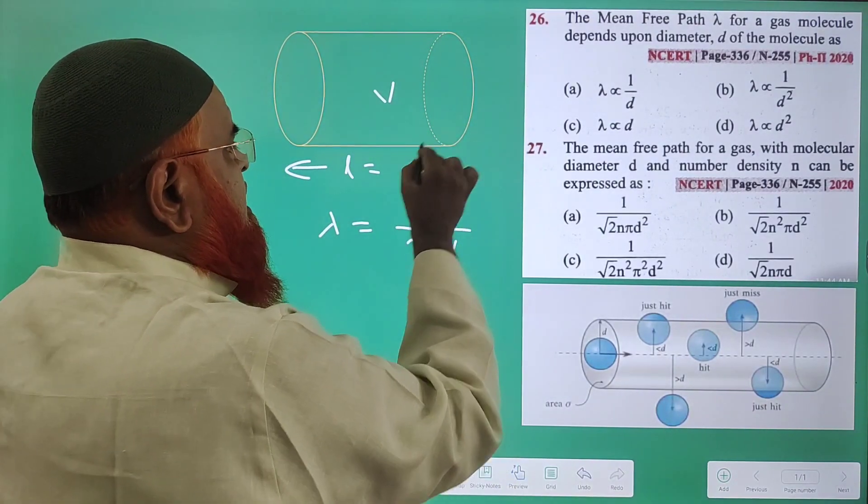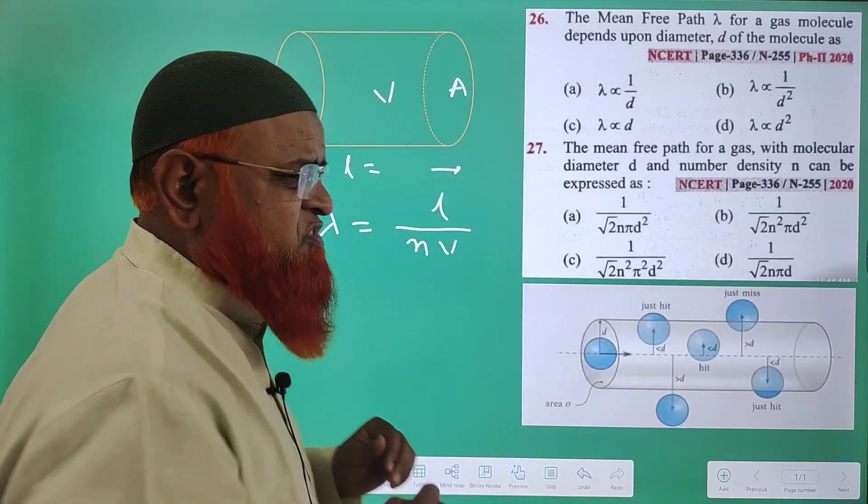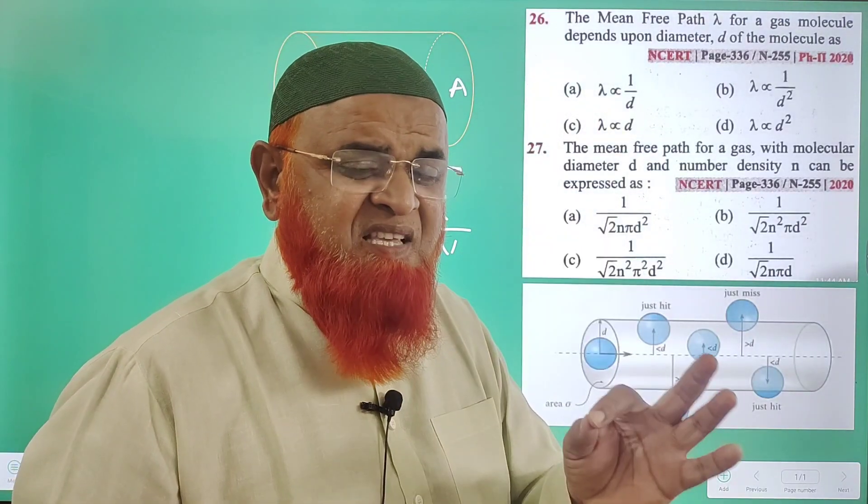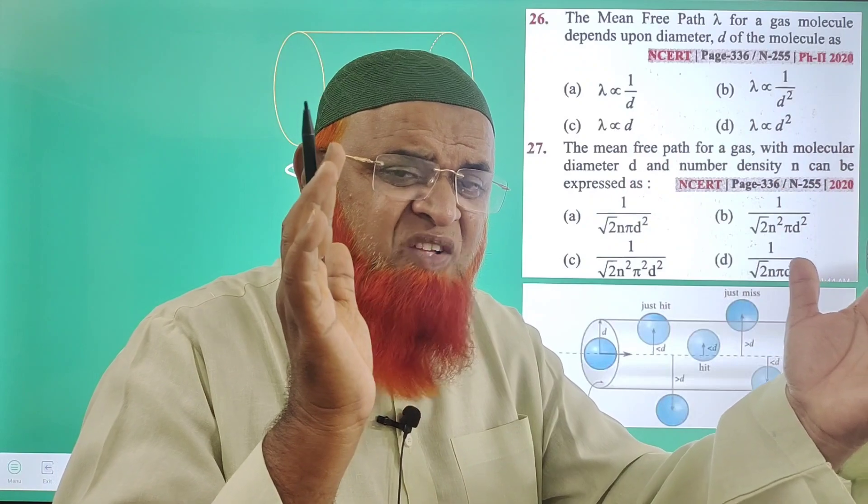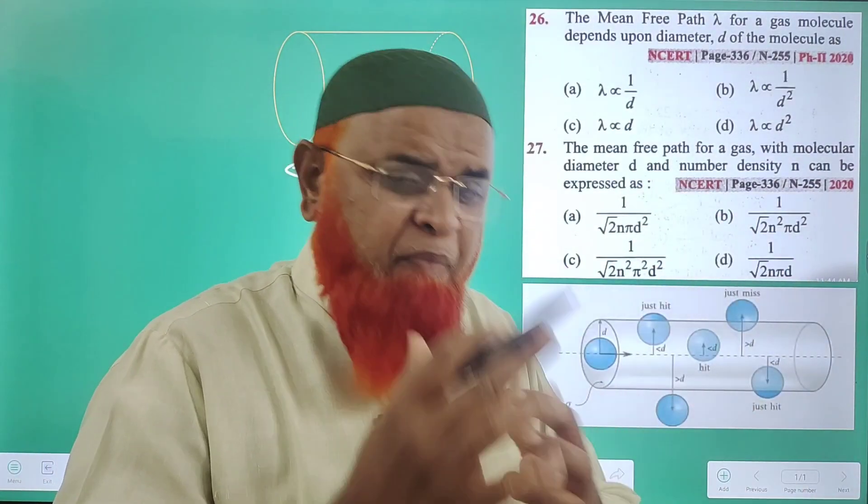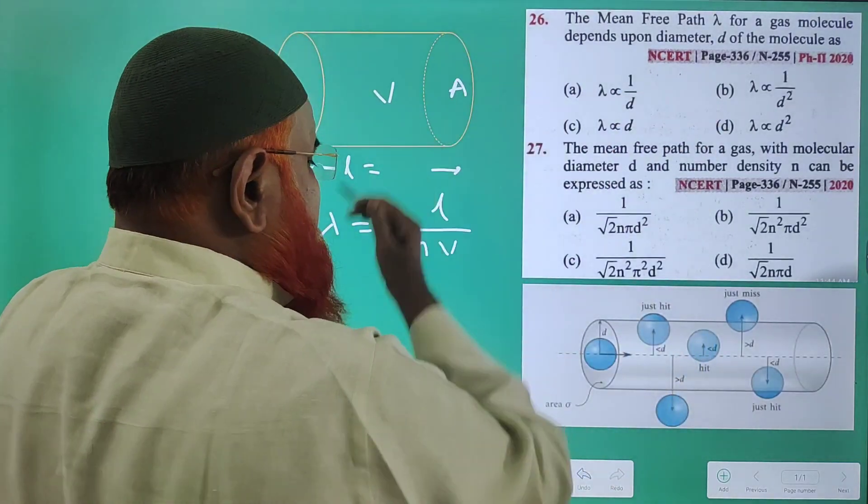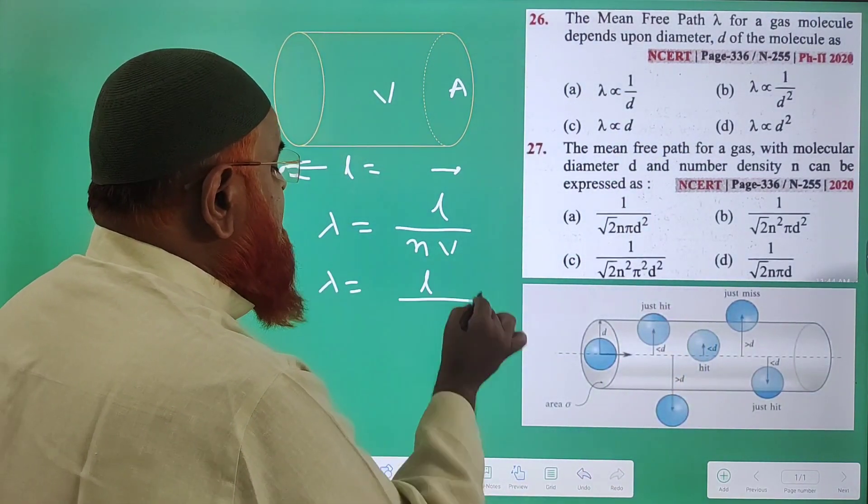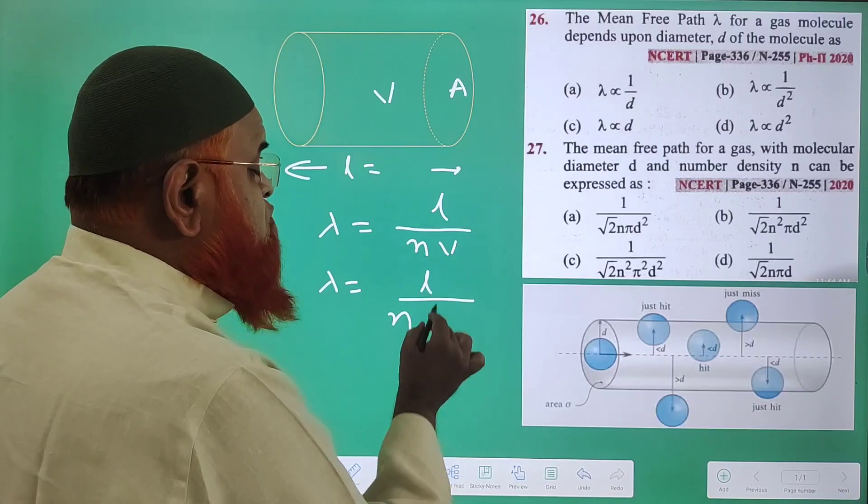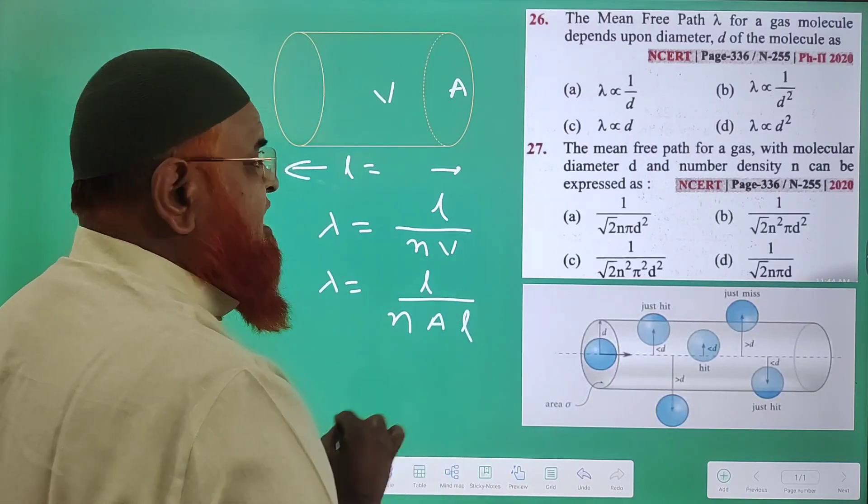This is going to be the area of cross-section of a cylinder. So mean free path is nothing but the length of an imaginary cylinder in which collisions have taken place, divided by the number of collisions in the volume of that cylinder. Therefore, lambda equals L by n, and volume is nothing but area into length.